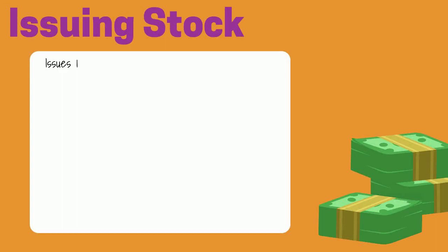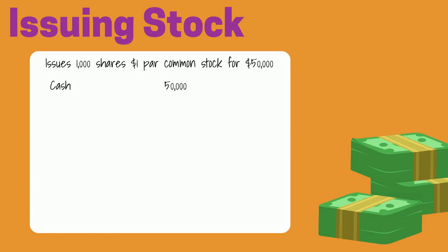Assume a company sells 1,000 shares of $1 par common stock for $50,000. The company would record a debit to cash for $50,000. Anytime a company issues stock that has a par or stated value, this is the amount that is recorded in the common stock account. In this example, the stock has a $1 per share par. Therefore, the company would credit common stock for $1,000.